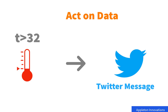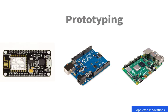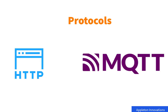ThingSpeak supports different types of hardware boards — you can work with Arduino, NodeMCU, ESP32, Raspberry Pi, and you can even write code from MATLAB, thanks to the available libraries and APIs. ThingSpeak also supports two important data protocols: HTTP and MQTT. You can use HTTP and MQTT to exchange data between hardware and ThingSpeak.